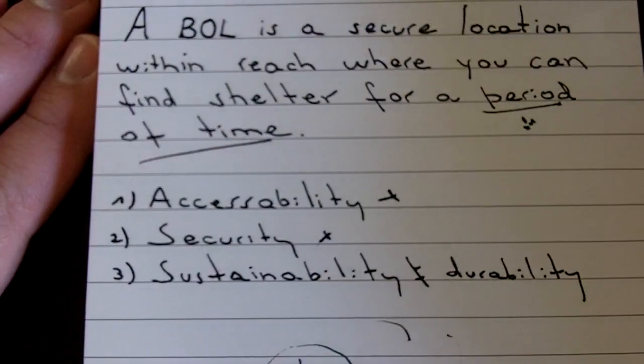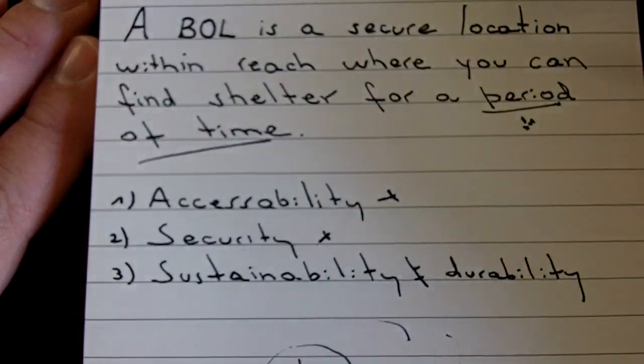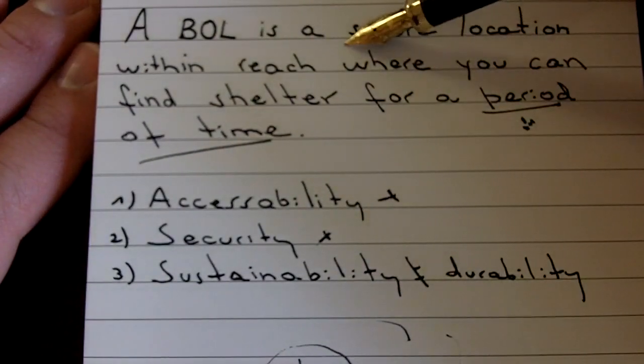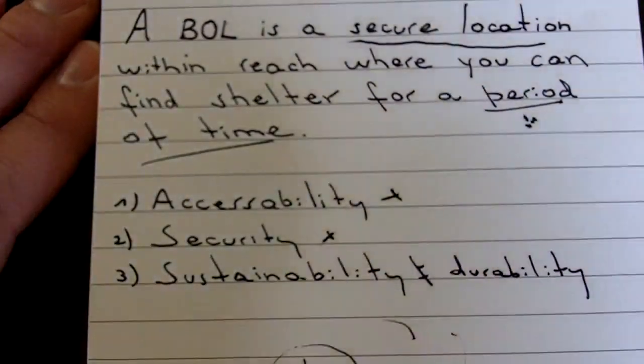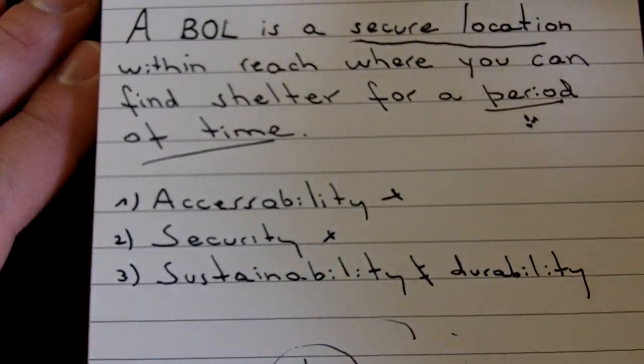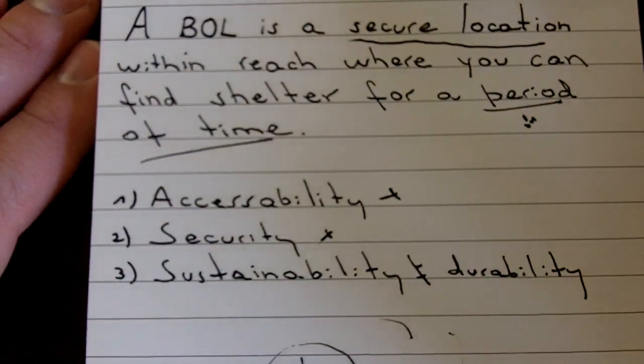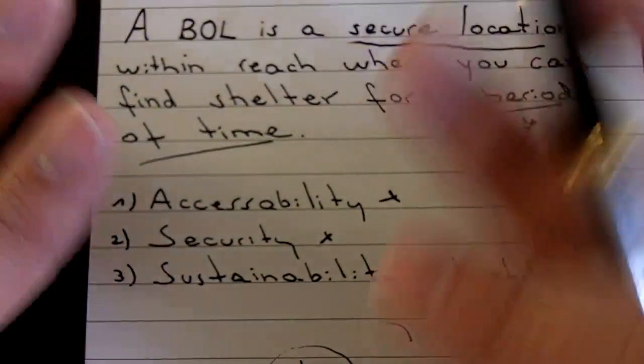If we take this definition apart, we will see that there are some key points. It has to be a secure location. So it has to be a second place, all right? Secure location is pretty important. Some people say, I'm already living in my bug out location. Guys that have maybe a cabin, a ranch, somewhere, they left the city and moved to their bug out location. So they say, I'm already bugged out.